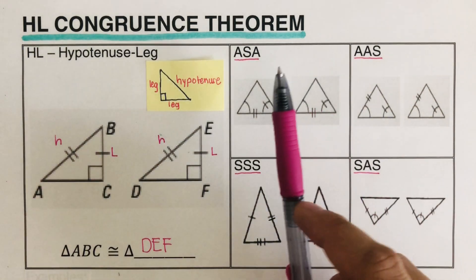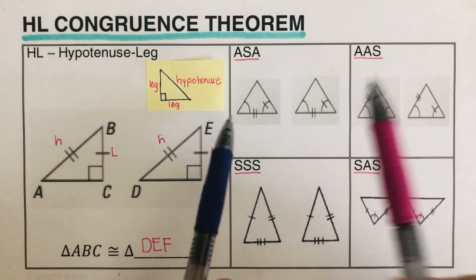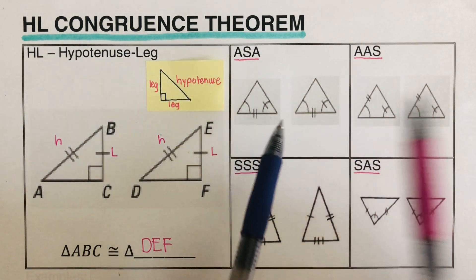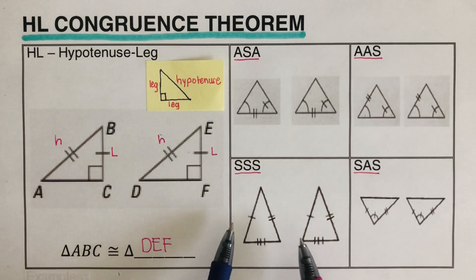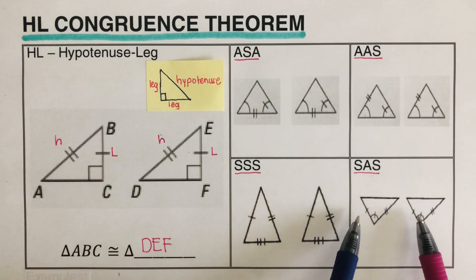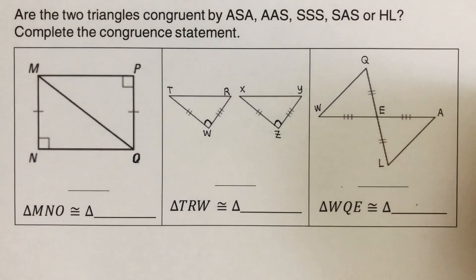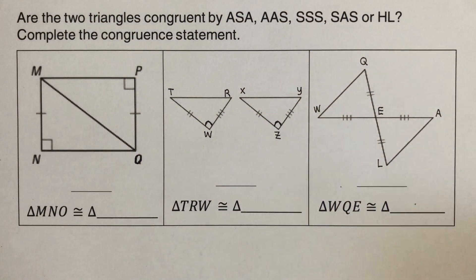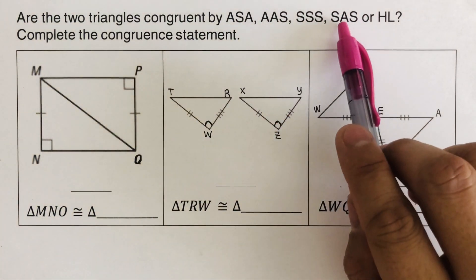There are other videos for all the rest of the congruence statements: angle-side-angle, angle-angle-side, side-side-side, and side-angle-side. Now we have five choices — ASA, AAS, SSS, SAS, or HL. I'll give you some triangles and we are going to determine which theorem works for each one.